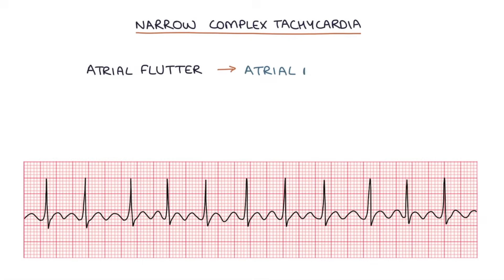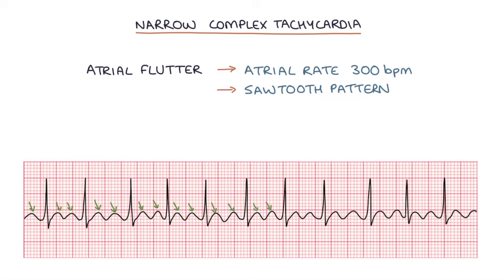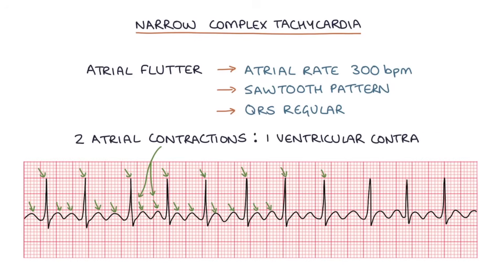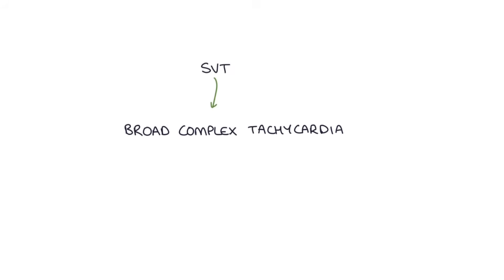In atrial flutter the atrial rate is usually around 300 beats per minute, giving a sawtooth pattern on the ECG, with QRS complexes occurring at regular intervals depending on conduction from the atria to the ventricles — usually two atrial contractions to one ventricular contraction, or two P waves to one QRS complex. Sometimes it can be difficult to distinguish between causes, so always seek help when in doubt. SVT can also cause a broad complex tachycardia if the patient also has a bundle branch block, but for now just remember that SVT typically causes a narrow complex tachycardia.